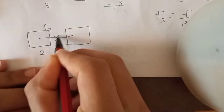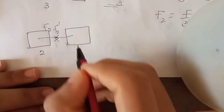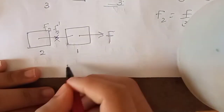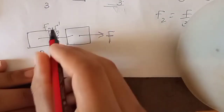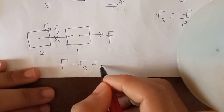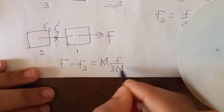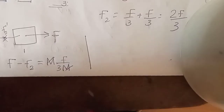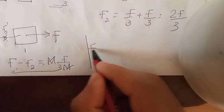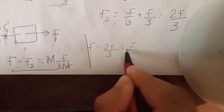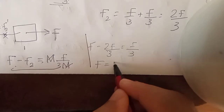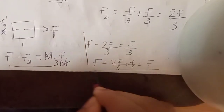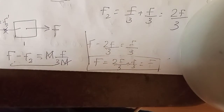Now, F3' is equal to the force contribution for F3. F2' is derived from F3', and similarly F1' follows the same pattern. Substituting, F equals 2F by 3 plus F by 3, giving us the force values for each compartment.